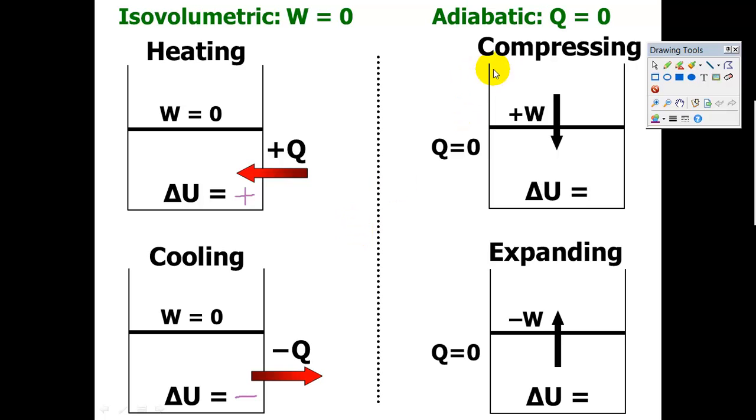On the right side, we have what's called an adiabatic situation, which means that there is no heat flowing in or out. You can think of it like a perfectly insulated cylinder, or you can think of it like a process that's happening so fast that there's no time for any heat to go in or out.